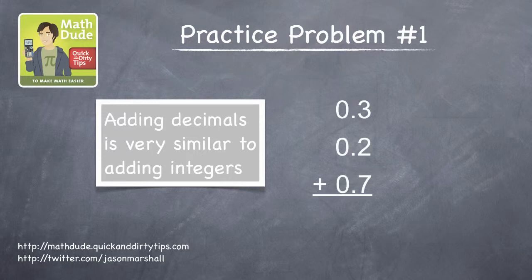For example, let's look at this relatively simple problem, 0.3 plus 0.2 plus 0.7. Our first quick calculating tip for adding integers was to look for pairs or groups of numbers that add to 10. So let's do the same thing here.